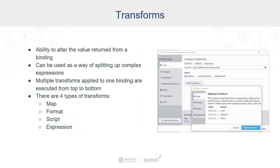Going beyond bindings, we have the concept of transforms, which are incredibly powerful and unique to Perspective. They give you the ability to alter a value from a binding. In Vision you often had to use custom properties or scripting, but here you can do it all within the binding itself. For example, you can take a value from a tag binding and transform it to a color, format it, or apply any kind of transform you want. Multiple transforms execute from top to bottom.